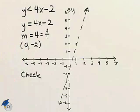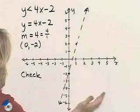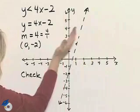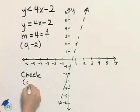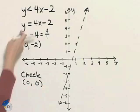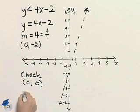We now need to determine which side of this boundary line we will shade. Is it this side or this side? I will pick an easy checkpoint (0, 0) and I will substitute it into the original inequality